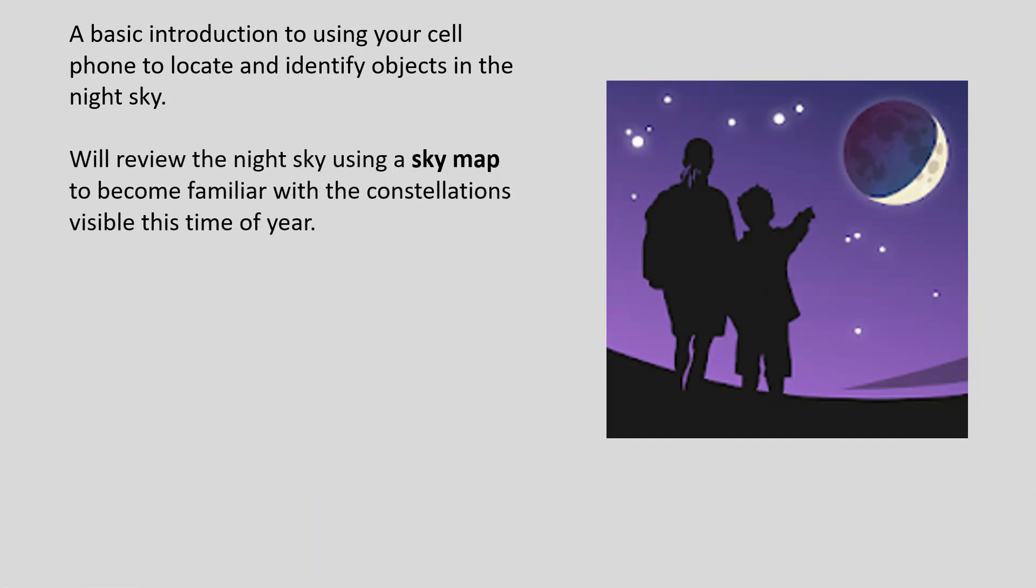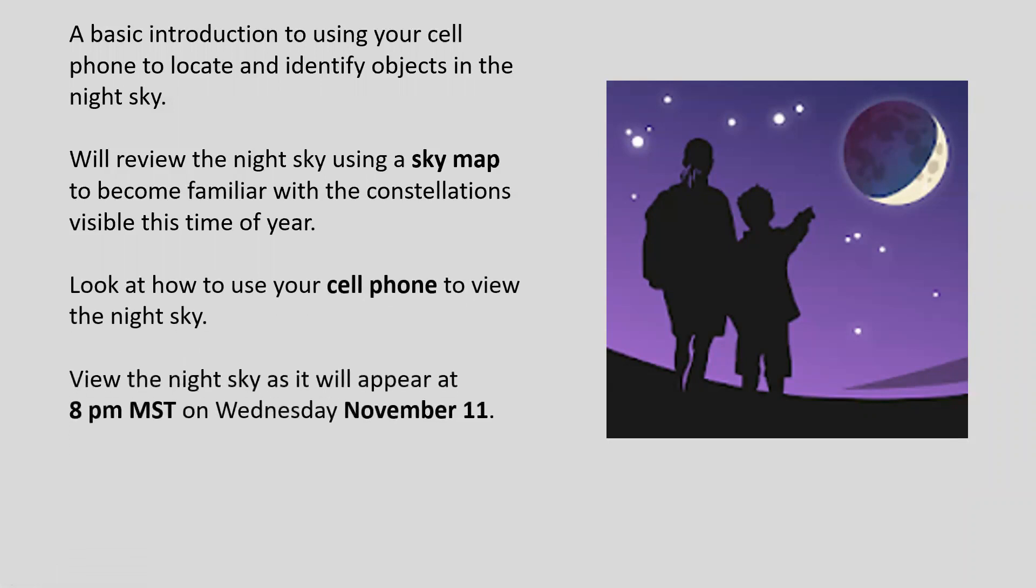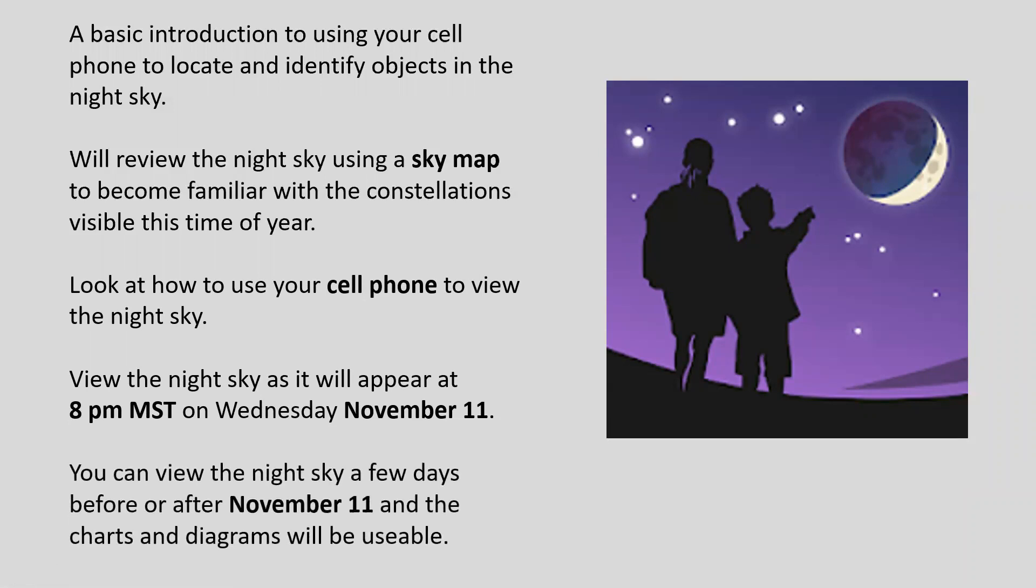So this is a basic introduction on how to locate and identify objects in the night sky. I'm going to start out by using a sky map, and I will explain that a little bit more to you. It's actually a paper map of the night sky that will help you stay oriented. Then we'll look at how you can use your cell phone. And I've done everything based upon looking at the night sky on Wednesday, November the 11th at 8 p.m. That happens to be the middle week of Cosmic Carnival, although you can go out a few days before or after, even as much as a week before or after, and the sky will not be that much different.